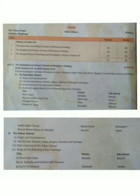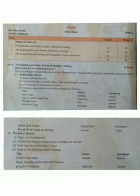The first painting is Maru Ragini, made by Sahebuddin, from the Mewar School. The second is Raja Aniruddha Singh Hara, made by Utkal Ram, from the Bundi School. The third is Chaukat Players, made by Dana, from the Jodhpur School. The fourth is Krishna on Swing, made by Naruddin, from the Bikaner School.